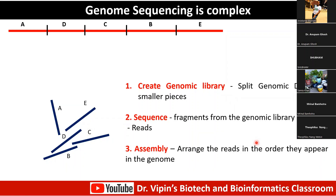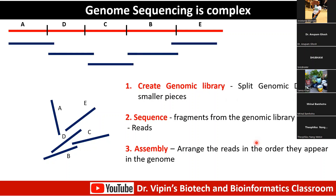Genome sequencing has become a lot easier because we are now in the era of long-range sequencers. Towards the end of the talk, I'll show that it is only now, in April 2022, that we have the first complete assembly of a human genome from telomere to telomere — from one end of the chromosome to the other without any gaps. Once you have the sequences, you get them back, arrange them in the order they appear in the genome, and finally get your genome sequence.